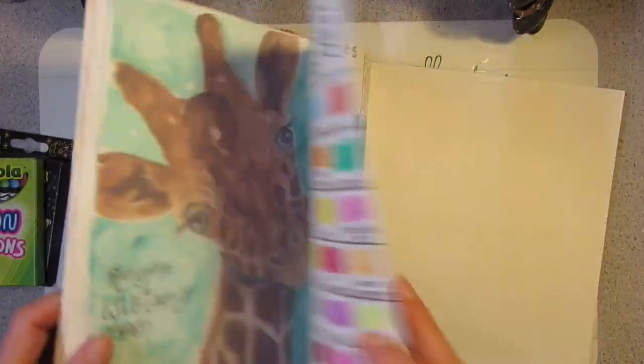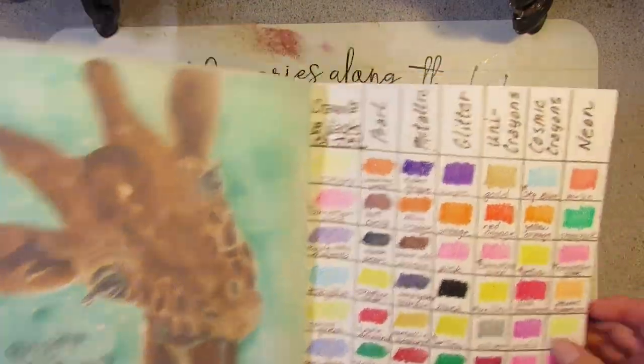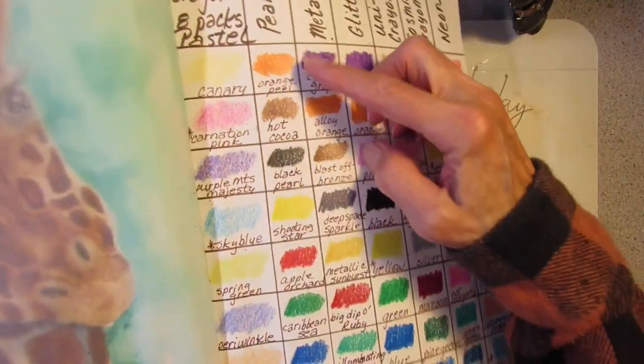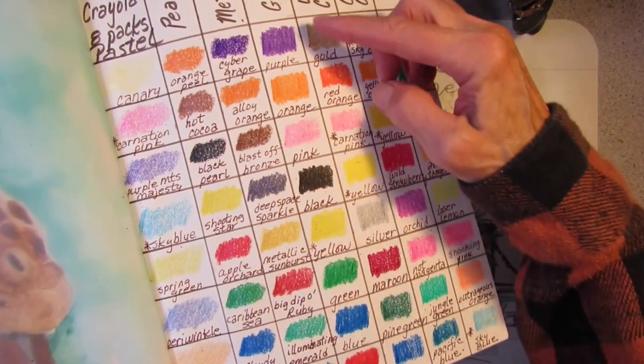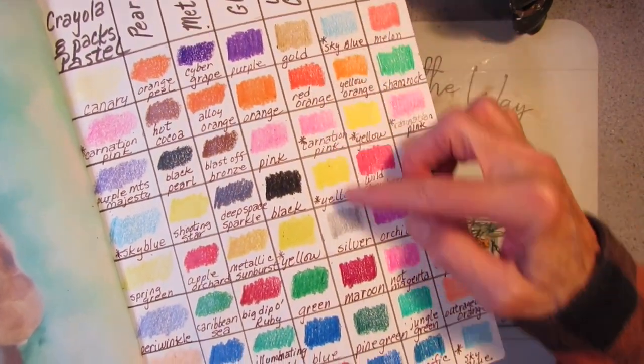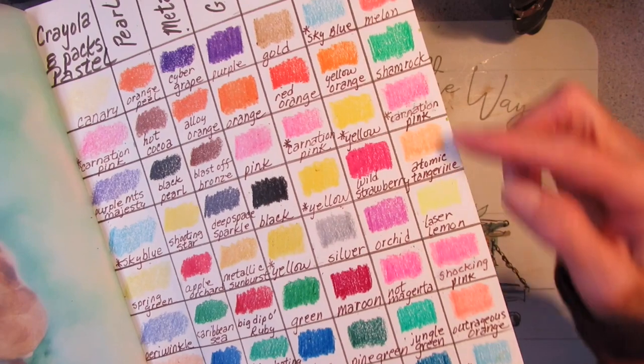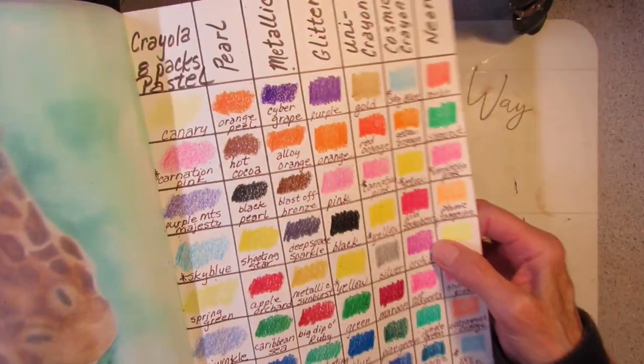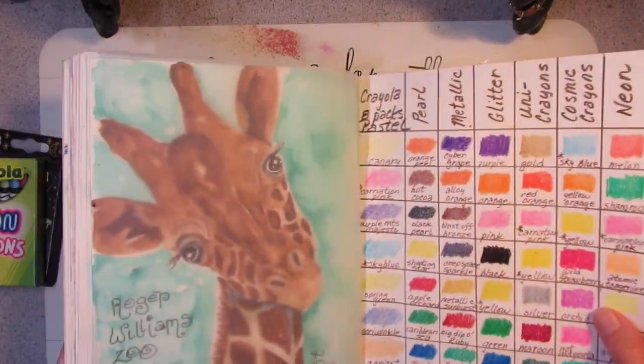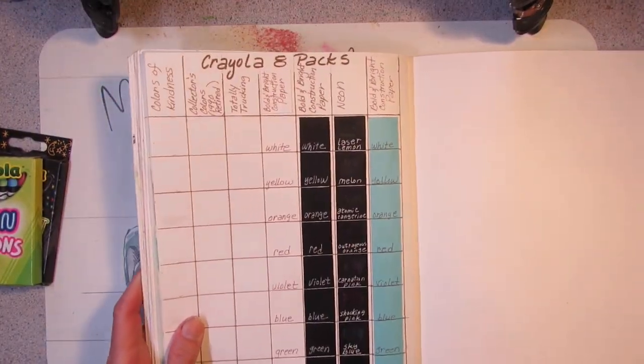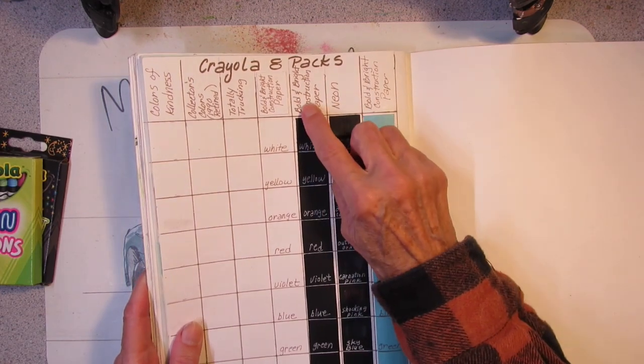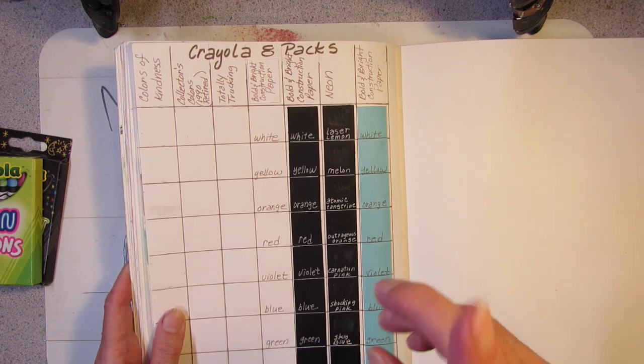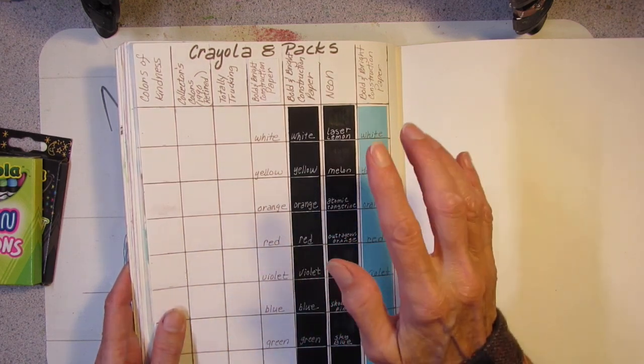This is my comparison of the other packs that I have. The eight packs: the pastels, the pearl, the metallic, the glitter, the uni crayons, the cosmic crayons, and the neon crayons. And I will link that video below to where I compared all of these. So I made a new chart for my new packs. And I put in one. I put the Bold and Bright construction paper with a black strip because I figured I'm going to try them on black and see how they do.